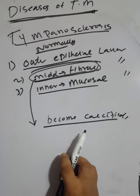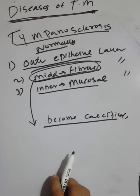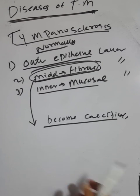These calcifications interfere with the conduction of sound. Perforation of the tympanic membrane may be central, attic, or marginal and is associated with chronic otitis media.